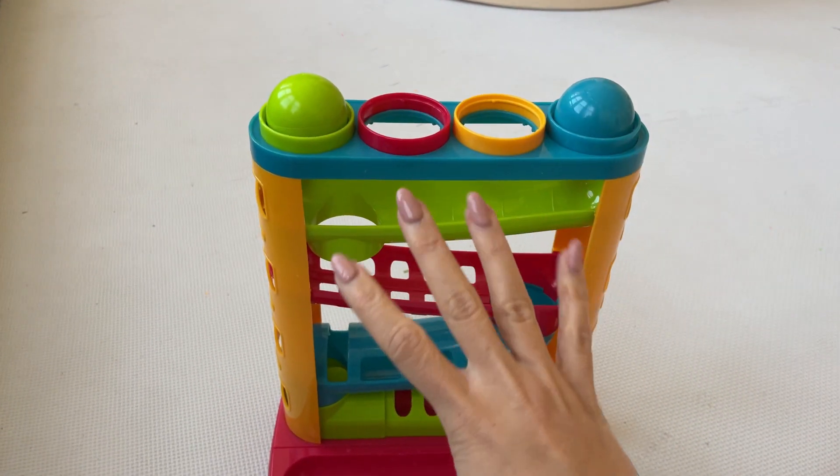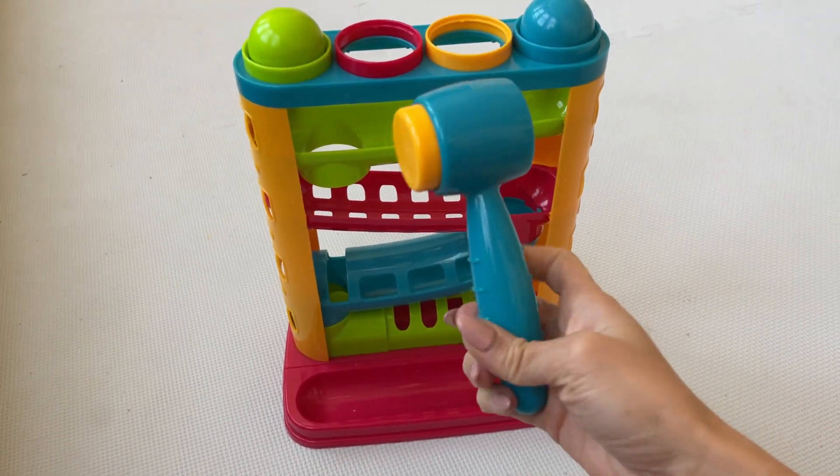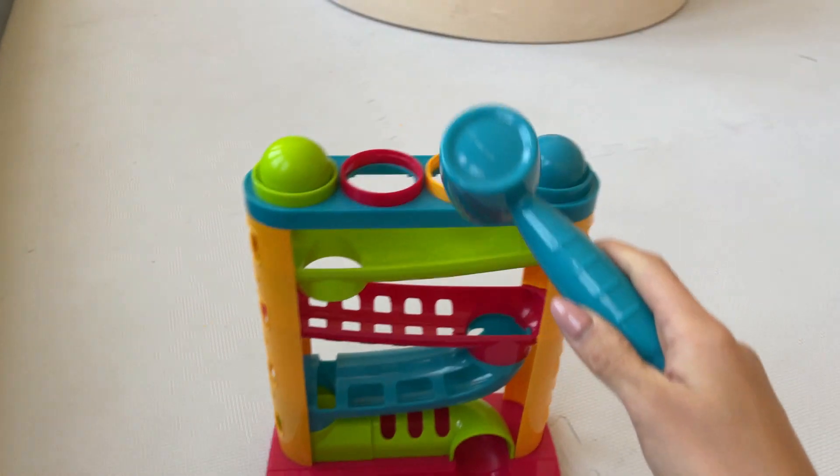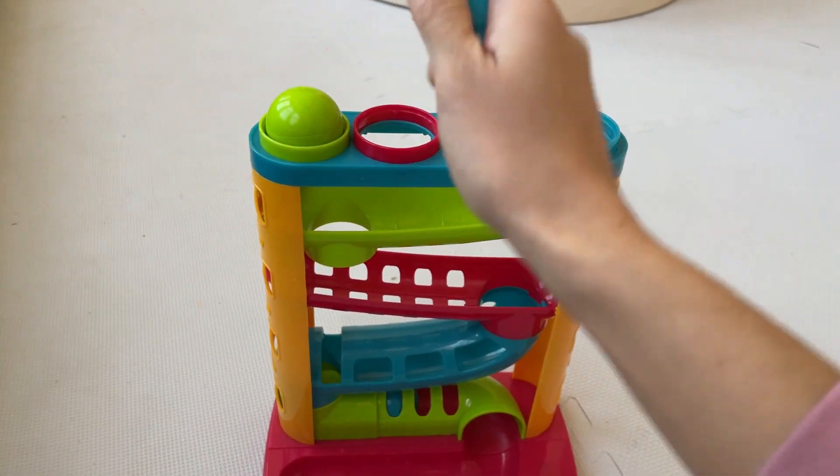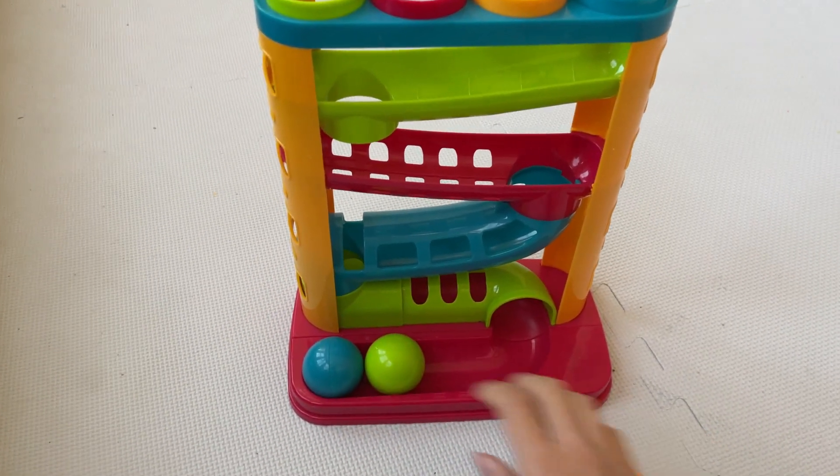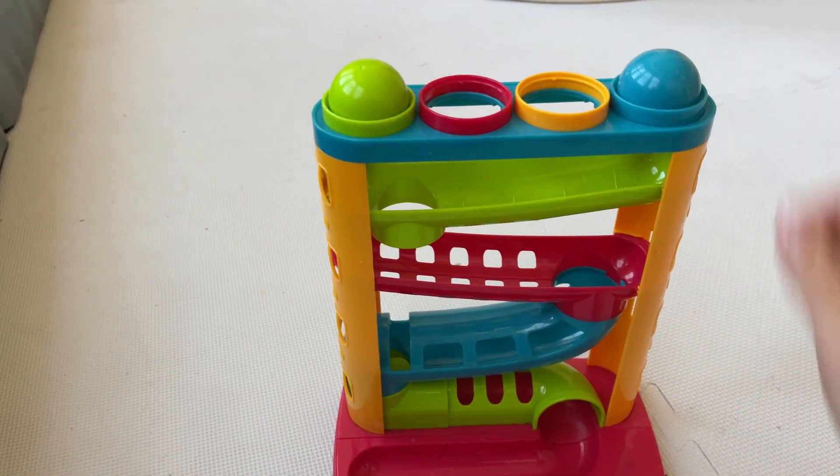So you're going to be getting four balls: green, red, yellow, and blue. They also give you this little hammer. It's soft right here, and your baby, your toddler can just pound it, and they fall through the holes and comes outside, and it can just do it over and over again.